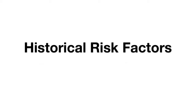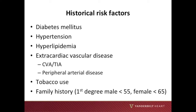We'll begin with historical risk factors. In reviewing the patient's chart and in gathering the history from the patient, focus on the following historical risk factors for coronary artery disease: diabetes mellitus, hypertension, hyperlipidemia, extracardiac vascular disease such as stroke, TIA, or peripheral arterial disease, a history of tobacco use, and a family history of coronary artery disease in first-degree male relatives less than 55 years old and in first-degree female relatives less than 65.